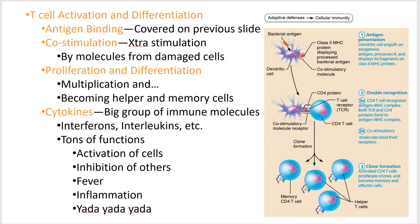Here is a dendritic cell which has eaten a bacterium — it scarfs it up, then shows it off on its class 2 MHC to a helper T cell. The helper T cell recognizes the antigenic determinant being presented and responds by making massive copies of itself — loads of helper T cells to do their jobs, which I'll show in the next screencast — plus memory cells to stick around.